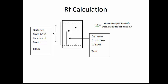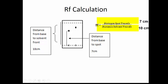For the RF calculation, using a TLC plate or chromatography paper, measure from the spotting line to the center of the spot — that's the distance the spot traveled. Also measure from the spotting line to where the solvent stopped, called the solvent front. For example, if the spot traveled 7 centimeters and the solvent traveled 10 centimeters, the RF value is 7 divided by 10, which equals 0.7.